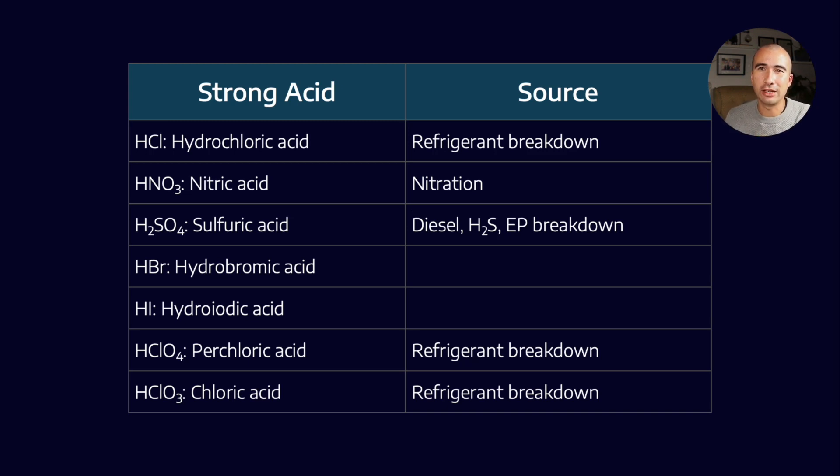Now H2S is not the only contaminant that we can have in our gas. Landfills are mixtures of all kinds of waste materials. So we could, for example, get chlorides that come from refrigerant breakdowns. They are going to form hydrochloric acid. We could get nitrates from the nitration process. They form nitric acid. Perchloric and chloric acids come from refrigerant breakdowns. So there's all kinds of contaminants that can cause acidic products that end up in our engine oil and can cause real damage to our engines.